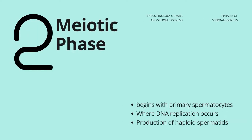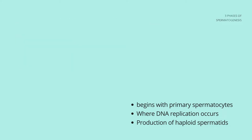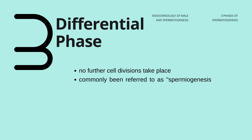The second is the meiotic phase, which begins with primary spermatocytes. It is where DNA replication occurs and haploid spermatids are produced. The third is the differentiation phase, where no further cell divisions take place. It is commonly referred to as spermiogenesis, in which a spherical undifferentiated spermatid undergoes a remarkable transformation.